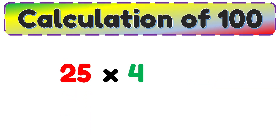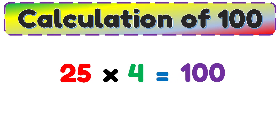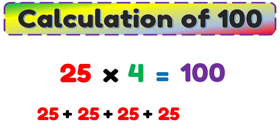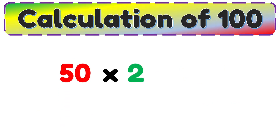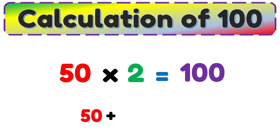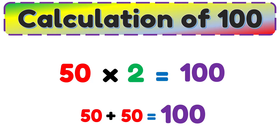25 multiplied by 4 is equal to 100. 4 times 25 is equal to 100. 50 multiplied by 2 is equal to 100. 2 times 50 is equal to 100.